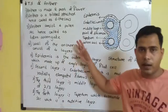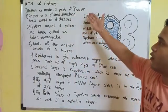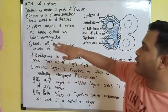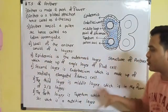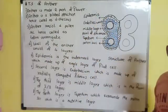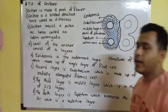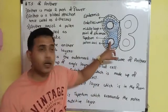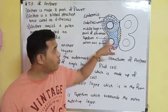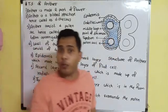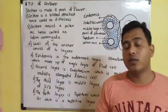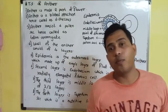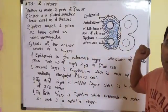Now you have studied the four layers of the anther. Anther is a bilobed dithecous structure and it is tetrasporangiate as it consists of four pollen sacs. Now what is microsporogenesis? Microsporogenesis is the formation of pollen grains inside the pollen sac.